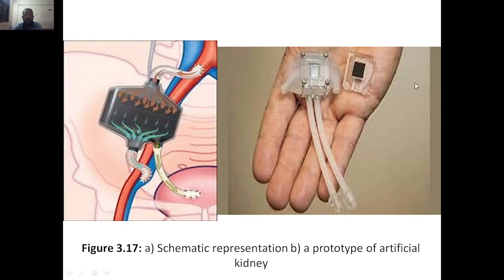Here is a schematic representation and a prototype of the artificial kidney. This is how it works: it takes blood in from one side, purifies it, and returns it to the bloodstream. There is one more inlet where waste goes out. The artificial kidney is very small — it takes blood, purifies it, and removes extra waste and excessive fluid.